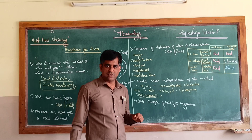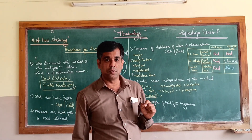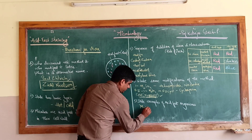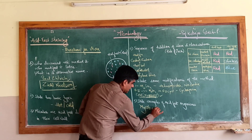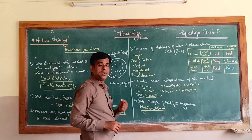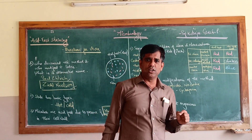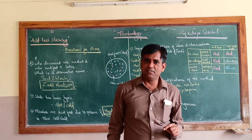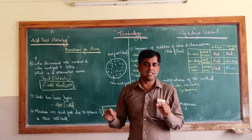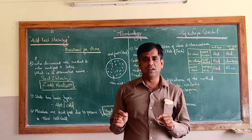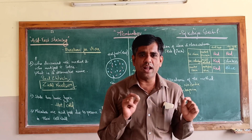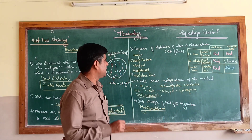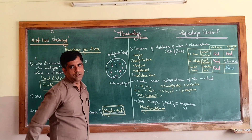Examples of acid fast organisms: various species of Mycobacterium - Mycobacterium leprae, Mycobacterium tuberculosis - are acid fast. Various species of Nocardia are also acid fast. After Ziehl-Neelsen staining, these organisms appear red, whereas non-acid fast organisms appear blue. Stay tuned with Professor Girish Kukreja for more in microbiology.